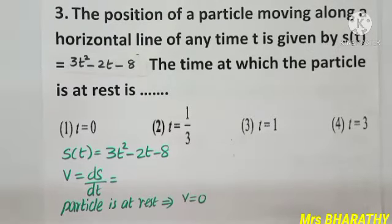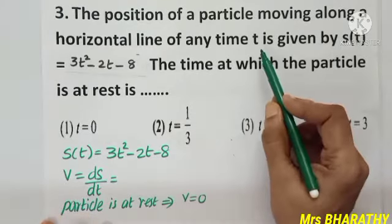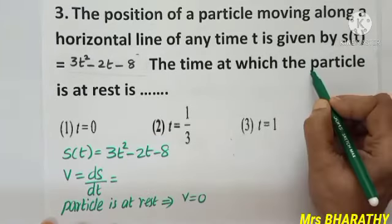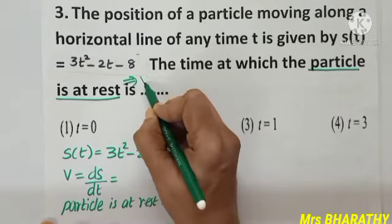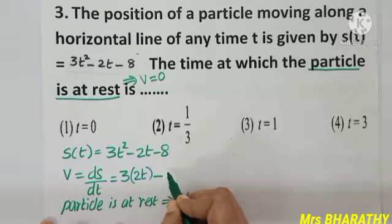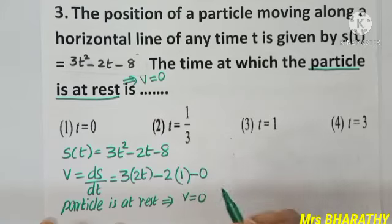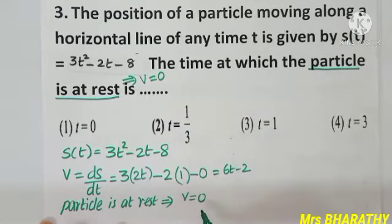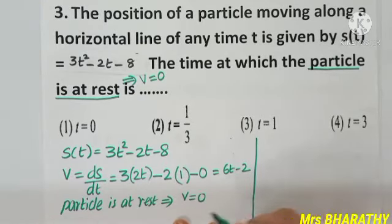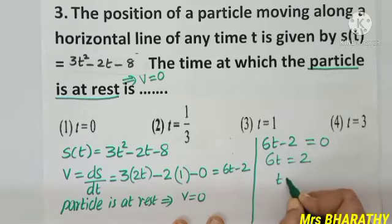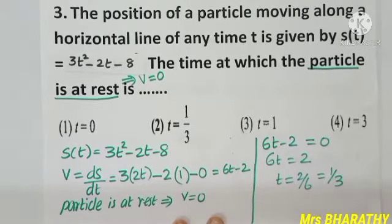Question number 3: the position of a particle moving along a horizontal line at any time t is 3t² − 2t − 8. The particle is at rest implies velocity must be zero. Differentiate to find velocity: 6t − 2. Setting velocity to zero: 6t − 2 = 0, so t = 2/6 = 1/3. Option 2 is the right choice.